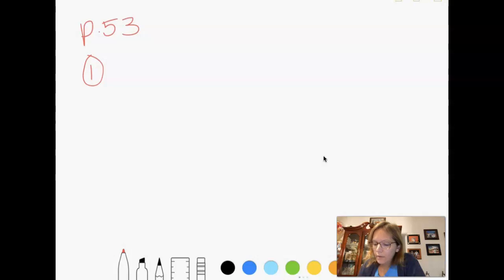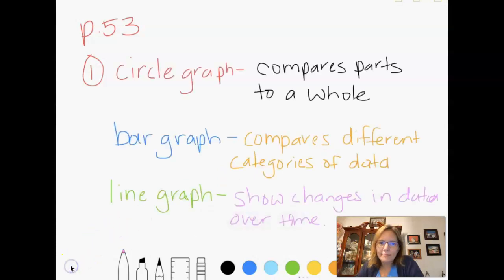So I'm going to teach this to you now because you haven't learned it yet. So a circle graph compares parts to a whole. A bar graph compares different categories of data. And a line graph shows changes in data over time. Remember, that's where we could see the ups and downs of what was going on with the data. They're all useful in different situations.